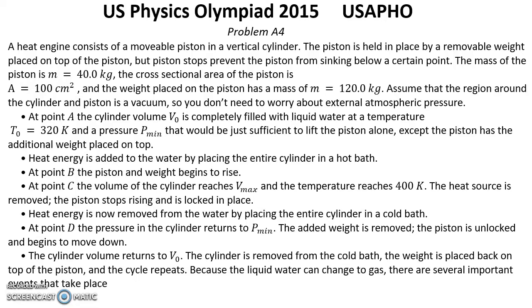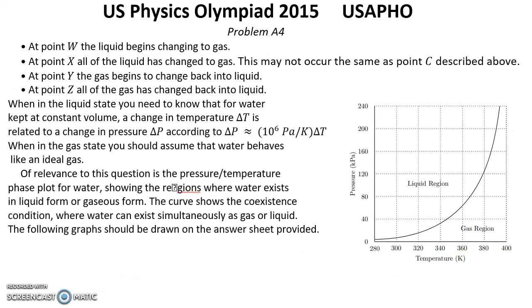Because the liquid water can change to gas, there are several important events that take place. At point W, the liquid begins changing to gas. At point X, all of the liquid has changed to gas — this may not occur at the same point as point C described above. At point Y, the gas begins to change back into liquid.